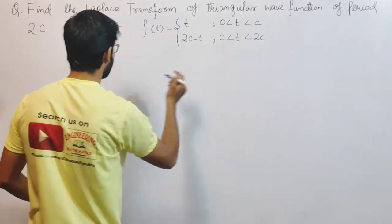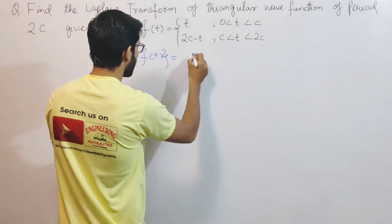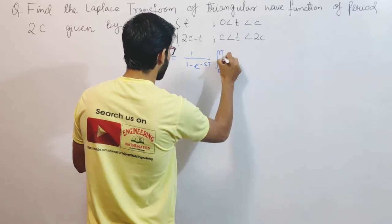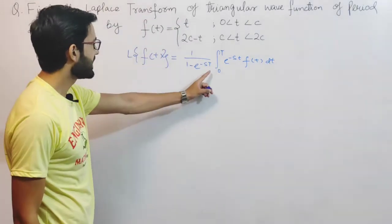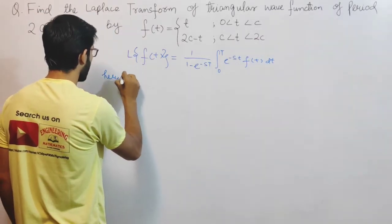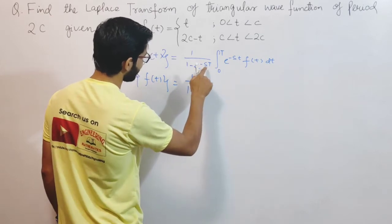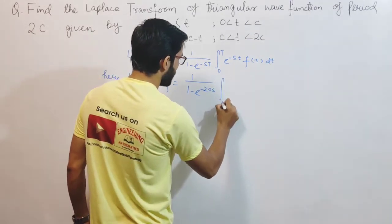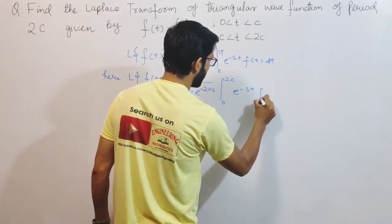The formula for the Laplace transform of a periodic function f(t) with period T is: L{f(t)} = 1 divided by (1 minus e to the power minus sT), multiplied by the integral from 0 to T of e^(-st) f(t) dt. Since our period is 2c, I substitute T = 2c, giving us 1 over (1 minus e^(-2cs)) times the integral from 0 to 2c of e^(-st) f(t) dt.